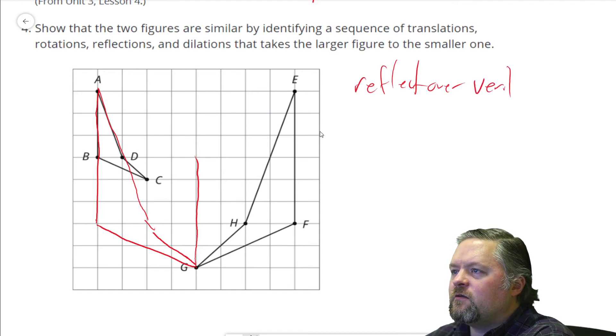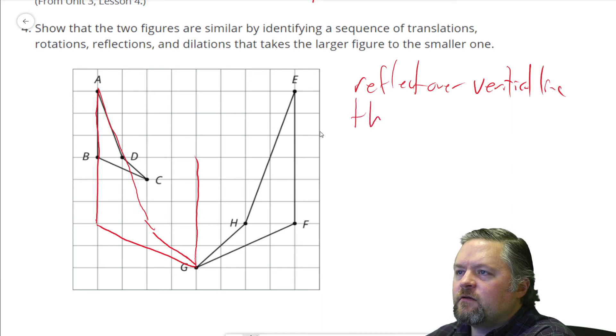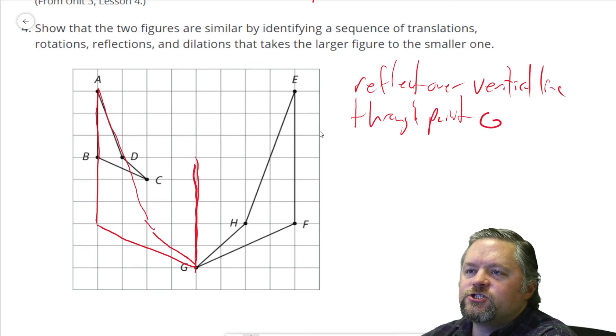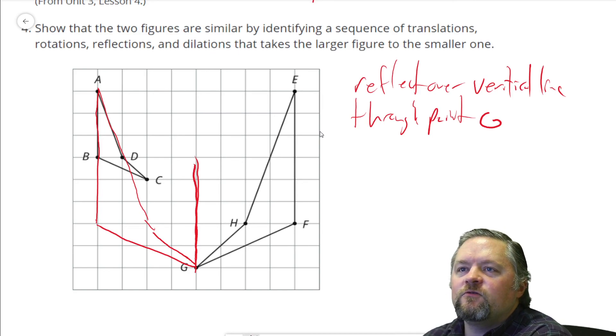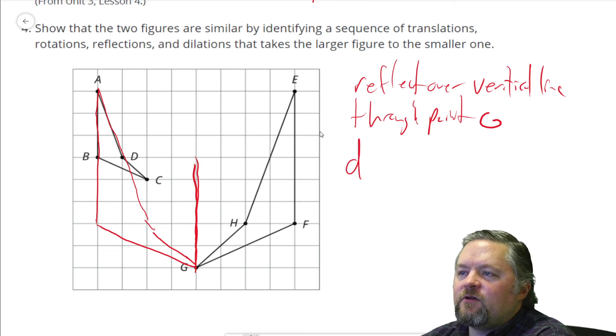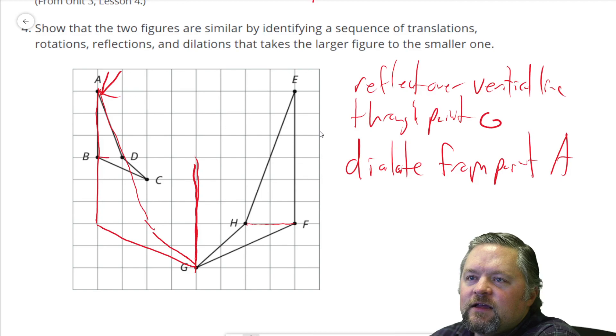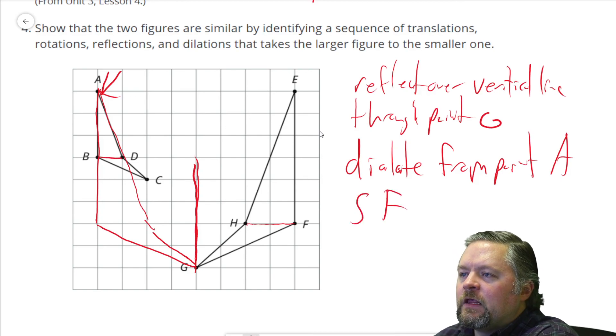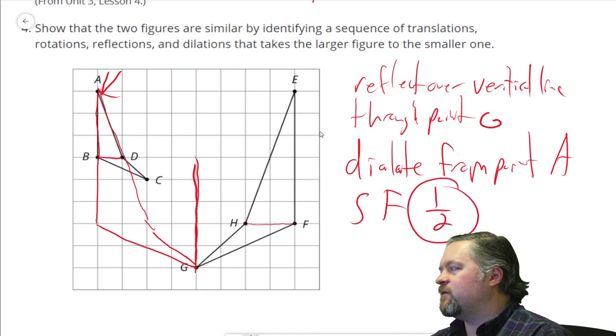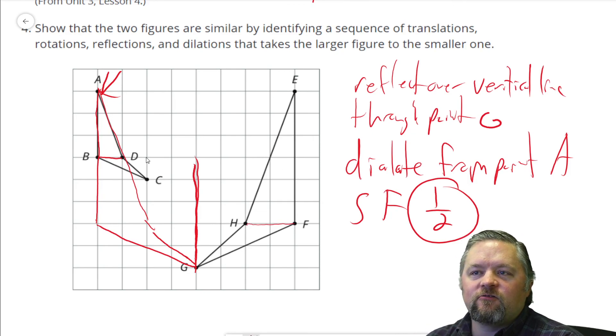Reflect it over the vertical, vertical line through point g. Vertical line going through point g, reflected over that line we get this nice little new red one I drew. Now e's already at a, so now all I have to do is dilate it from point a, from point a which is here. And what's the scale factor going to be? Well I look quickly and that's two units and that's one unit. We need a scale factor of one half. So reflect it then dilate it. Make sure your points are correct, line of reflection is correct. That puts the large one onto the smaller one, therefore they have to be similar to each other.